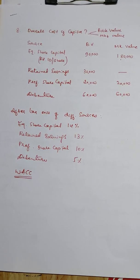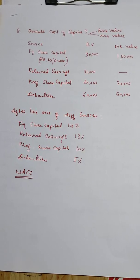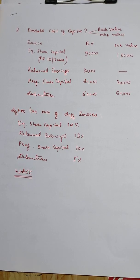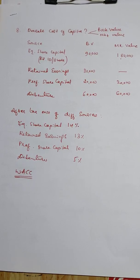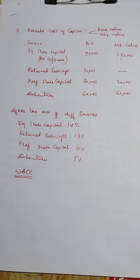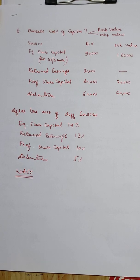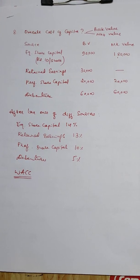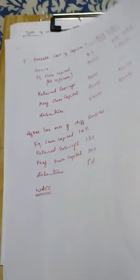The after-tax cost of capital for the different sources: equity share capital is 14%, retained earnings is 13%, preference share capital is 10%, and debentures is 5%.